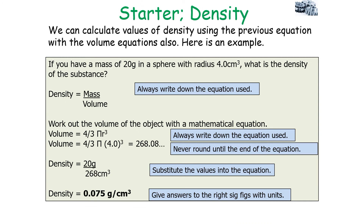If a question tells you the shape of the object, the first step is to work out its volume using the appropriate mathematical equation. For example, if it's a sphere, you'd calculate 4/3 pi r cubed, use that as your volume, then apply density equals mass over volume, giving your answer to the correct number of significant figures with the correct units.